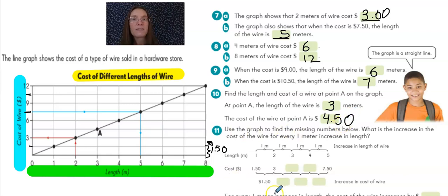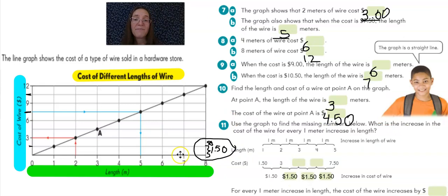And my friends, I am doing this particular problem with you because question eleven has been really, really hard for a lot of kids in a lot of different classes. So let's do this one together. It says use the graph to find the missing numbers below. What is the increase in the cost of wire for every one meter increase in length? Now we actually already figured that out here when we were just working to understand the graph. What that means is every time it goes up one, it goes up by a dollar fifty. And so you can see down here I filled in that dollar fifty because we figured that out. Every time it goes up, same amount.